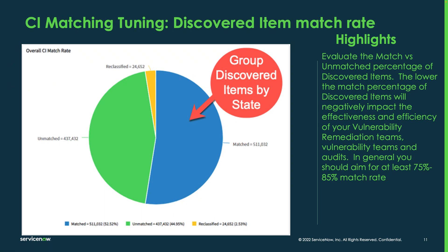For CI matching tuning, first we need to understand where we're at by looking at our data. A good way to visualize this is to use the report capability from a list view. If you go into Discovered Items and group or report by state — in this case we did a pie chart — you can quickly see where you're at. Here we've got a 52% match rate and 44% unmatched, with some records being reclassified by IRE. In general, you should aim for at least 75% to 85% match rate if your data allows.